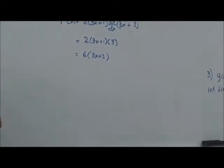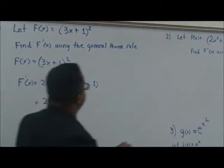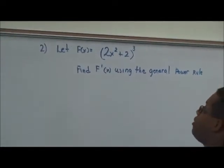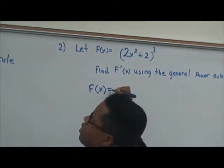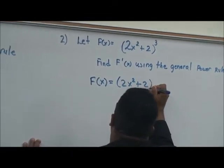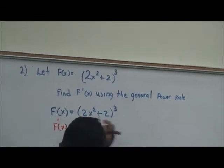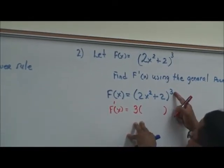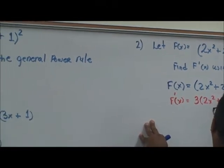Now we're going to work a guided practice problem. f of x is equal to 2x squared plus 2 raised to the third power. We rewrite this as f of x equals 2x squared plus 2 raised to the third power. Taking the derivative, we bring the 3 down — the exponent becomes 3 minus 1, which is 2 — and the inside function stays as it is. So we have f prime of x equals 3 times 2x squared plus 2 raised to the second power.